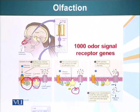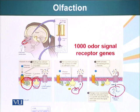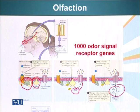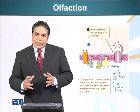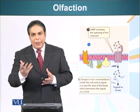Cyclic AMP in these olfactory cells, rather than activating protein kinase A, binds an ion channel receptor, causing it to open. There is an influx of positively charged ions — sodium and calcium — resulting in a change in the charge differential across the membrane, depolarizing the neuron. When depolarized, the neuron sends an electric impulse to the brain, which detects the particular odor molecule present in the environment.